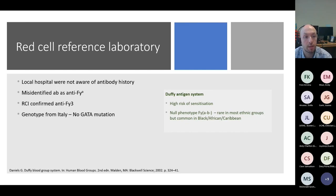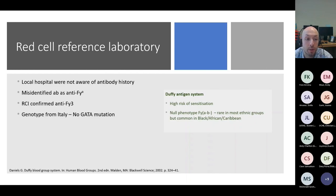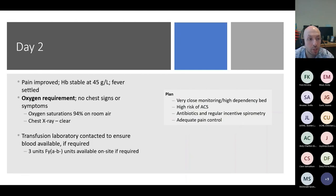She was given immunoglobulin and steroids, and we advised avoiding further transfusion and giving hematinics — folic acid, B12, erythropoietin, and oral iron — with very close monitoring while arranging transfer to our hospital. Her ferritin was very high at 15,000. After discussions with the transfusion team, it became apparent that the local hospital was unaware of her previous antibody history. They had picked up an anti-Duffy A antibody, but she was known to have a Duffy 3 antibody, and her genotype from Italy showed no GATA mutation — confirming she was a true null phenotype, Duffy A and B negative. It was suspected she had been given Duffy B-positive units.